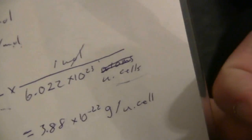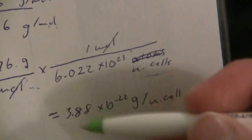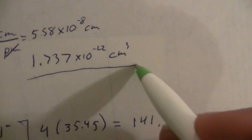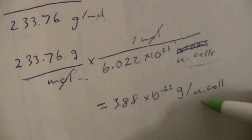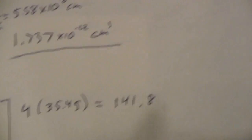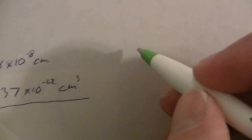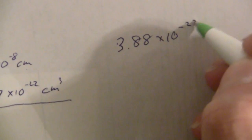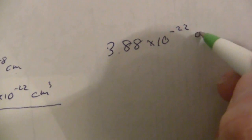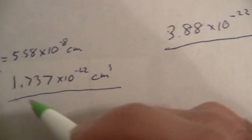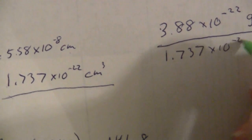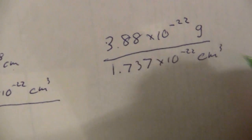So, for the density, here's our mass, and we previously calculated the volume up here. So, mass divided by volume, and we get our density. Let's put that here, 3.88 times 10 to the negative 22 grams divided by 1.737 times 10 to the negative 22 cubic centimeters.